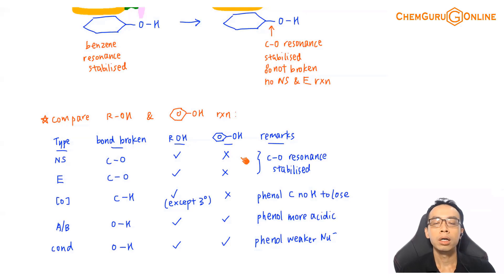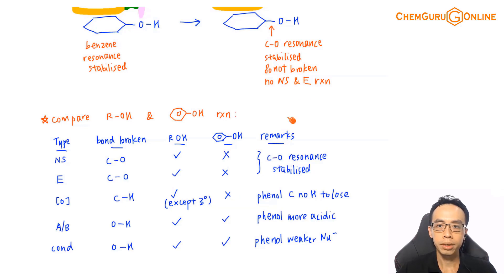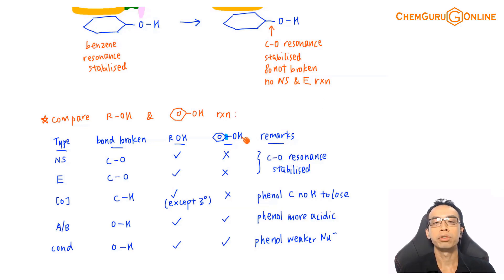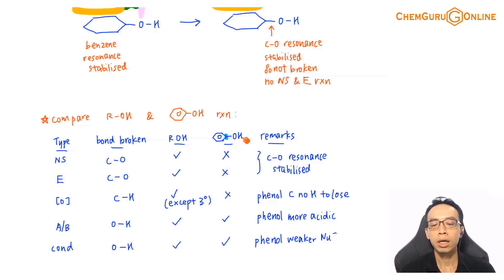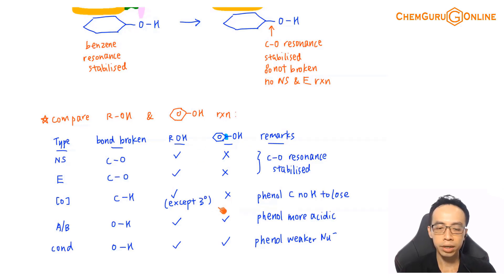For phenol, since the CO bond is stabilized by resonance and cannot be broken, there is no nucleophilic substitution and no elimination reaction. Oxidation also does not apply to phenol, because the phenol carbon directly attached to the OH group does not have a hydrogen. Without a hydrogen on that carbon, we cannot oxidize it. So in the syllabus, phenol cannot undergo oxidation.